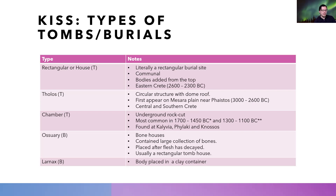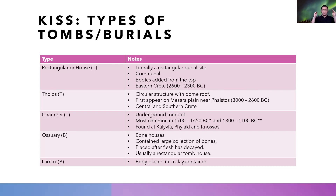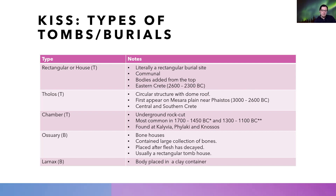The next type is the Tholos tomb — a circular structure with a dome roof. These first appear on the Massara plain near Phaistos around 3000 to 2600 BC, so they are quite old, but they don't really kick off much until later. These appear in central and southern Crete.